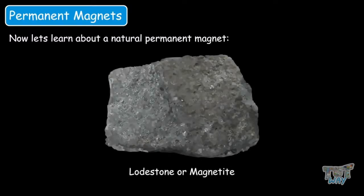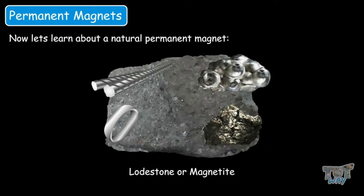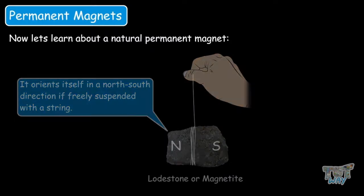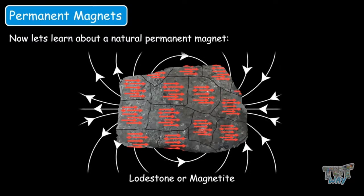Now let's learn about a natural permanent magnet. The mineral rock known as lodestone or magnetite naturally exists in nature and possesses an unusual property of attraction towards iron. It naturally attracts objects made up of iron, nickel, cobalt and gadolinium. Also, it orients itself in a north-south direction if freely suspended from a string. Lodestone is a naturally occurring permanent magnet in which domains always point in the same direction, retaining its magnetic field without any external assistance.